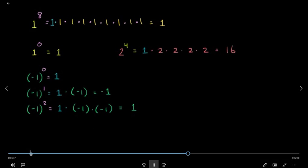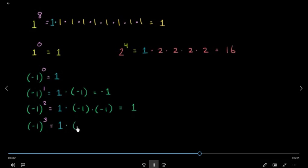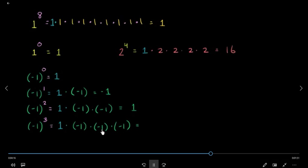What does this mean? That if you have two values, you will always lose. Then you have three values of minus 1. So you have to solve this problem. Well, if you use minus 1 then you have plus 1.